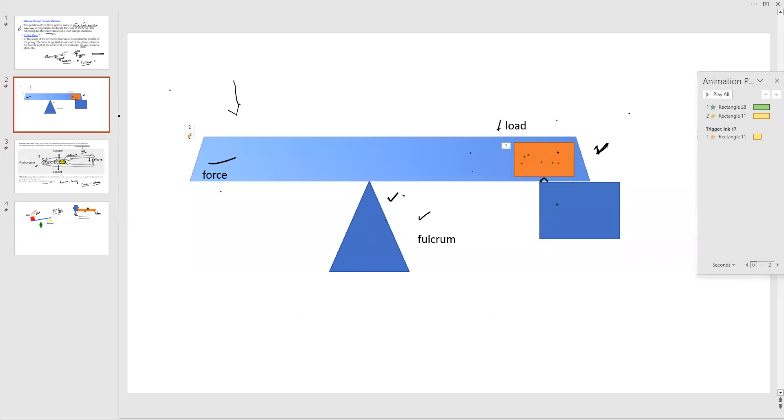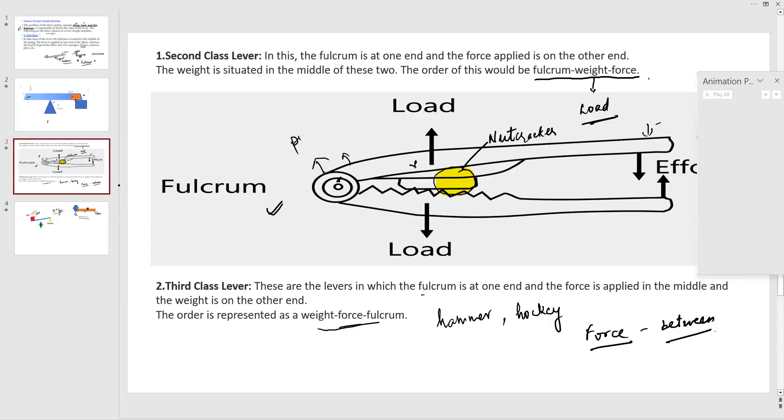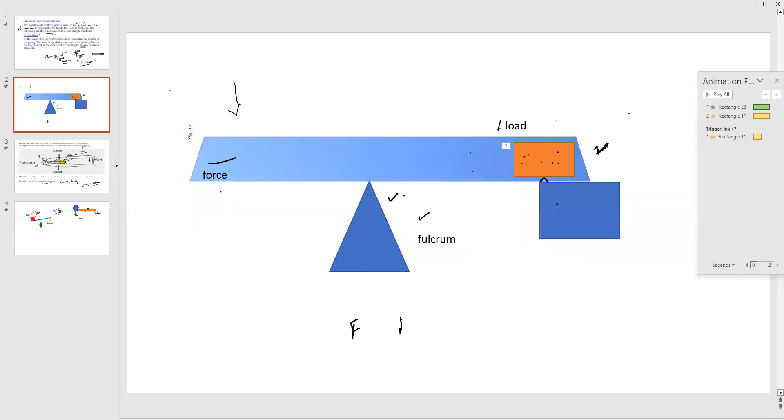For the first class, fulcrum is between. Second class, load was in between. And third, effort was in between. To remember the things which are situated in between, I used to say to my students to learn FLE: first, fulcrum is in between; second, load is in between; and third, effort is in between. When the load is in between, it is a nutcracker. When an effort is in between, it will be tongs or a fishing rod.